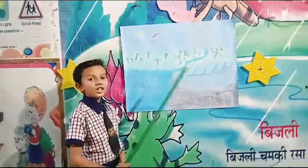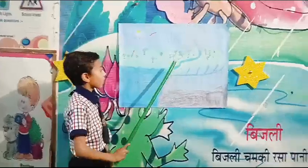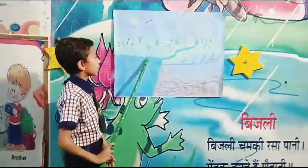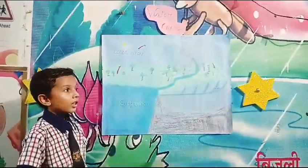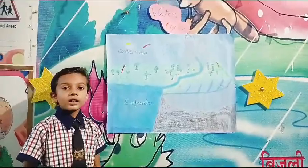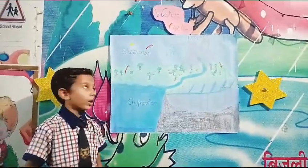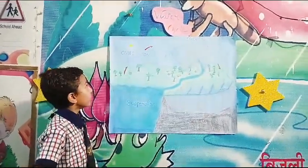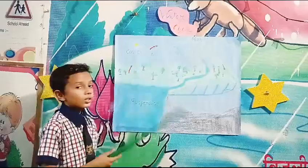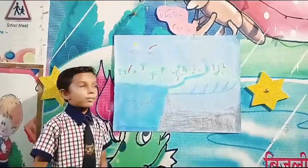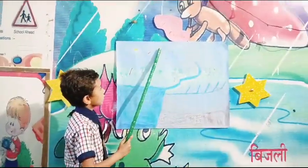The first stage is evaporation. When the water of rivers, lakes, and ponds heats up due to the sun, it changes into vapor and rises up in the sky. This is called evaporation. The second stage is condensation.